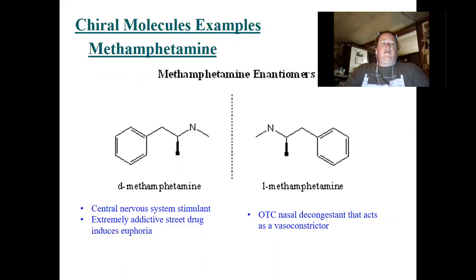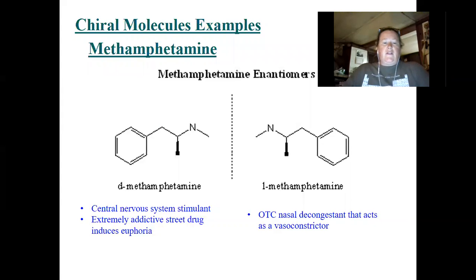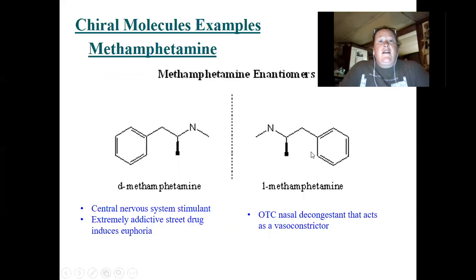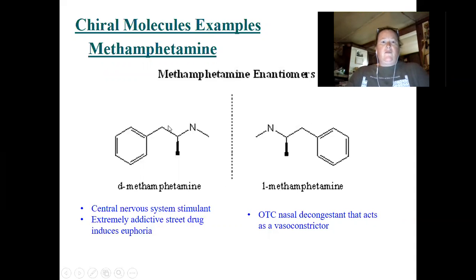We have the right-handed dextromethamphetamine and the left-handed version — they are just mirror images of one another. The dextro, the right-handed, is the methamphetamine you hear about that is highly addictive, a street drug that induces euphoria and is a central nervous system stimulant. The mirror image is found in over-the-counter nasal decongestants as a vasoconstrictor. These are not amino acids, but a great example of chirality in chemistry.